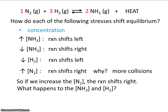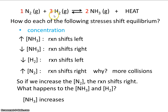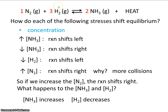Here's a more challenging question. If we increase the concentration of nitrogen, the reaction shifts right — we just established that. What happens to the concentration of ammonia and hydrogen? Well, if the reaction shifts right, the concentration of ammonia should increase. What two things are required to make ammonia? Nitrogen and hydrogen. So if the reaction shifts right and we make more ammonia, we're consuming both nitrogen and hydrogen, meaning the amount of hydrogen will decrease.